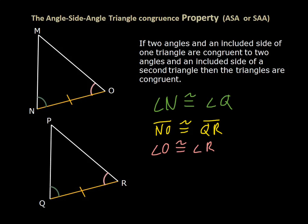These take some practice to identify quickly — which is the angle and which is the segment — so we're going to practice quite a bit so you feel comfortable. Then we write our final statement: triangle MNO is congruent to triangle PQR by Angle-Side-Angle.